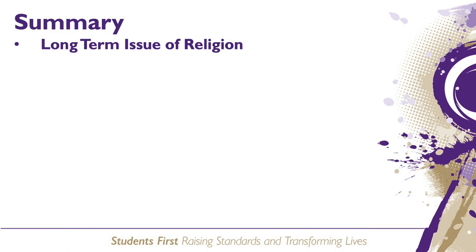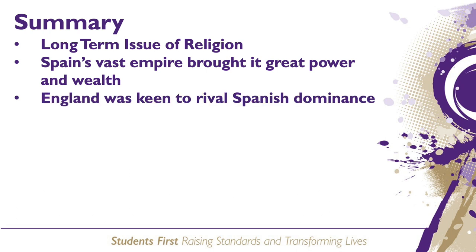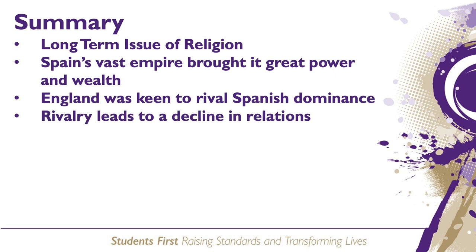In summary, the rivalry between England and Spain existed for several reasons. A long-term issue was that they followed two different religions: England a Protestant nation and Spain devoutly Catholic. Spain ruled a vast empire which brought it great power and wealth, and under Elizabeth, England became keen to rival Spanish dominance in terms of trade. This rivalry meant that throughout Elizabeth's reign the relationship between the two nations declined, as their competing aims led them into conflict. For much of Elizabeth's reign relations were under control, and it wasn't until 1585 that the relationship had completely broken down and led to war.